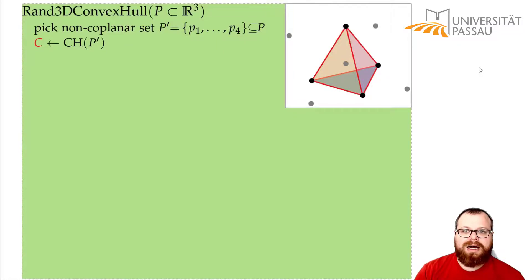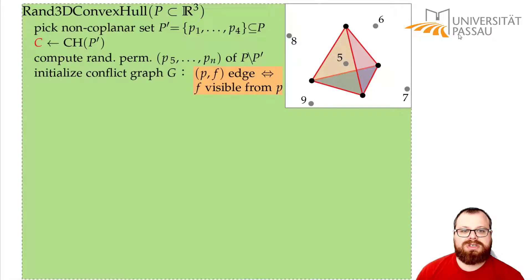And now we take the other points in randomized order. We have a randomized permutation p5 to pn of all the points that are not in P-prime. And in every step, we want to take one of these points and process it.